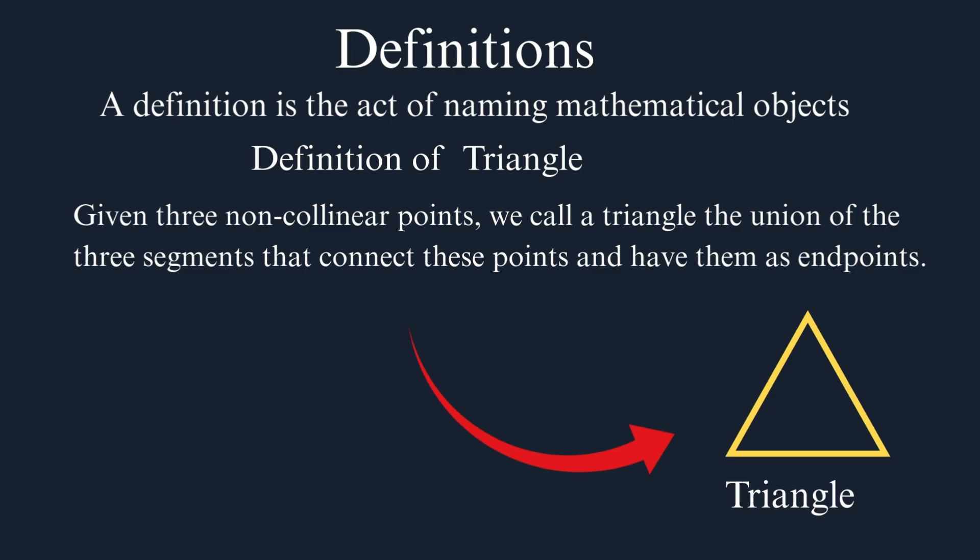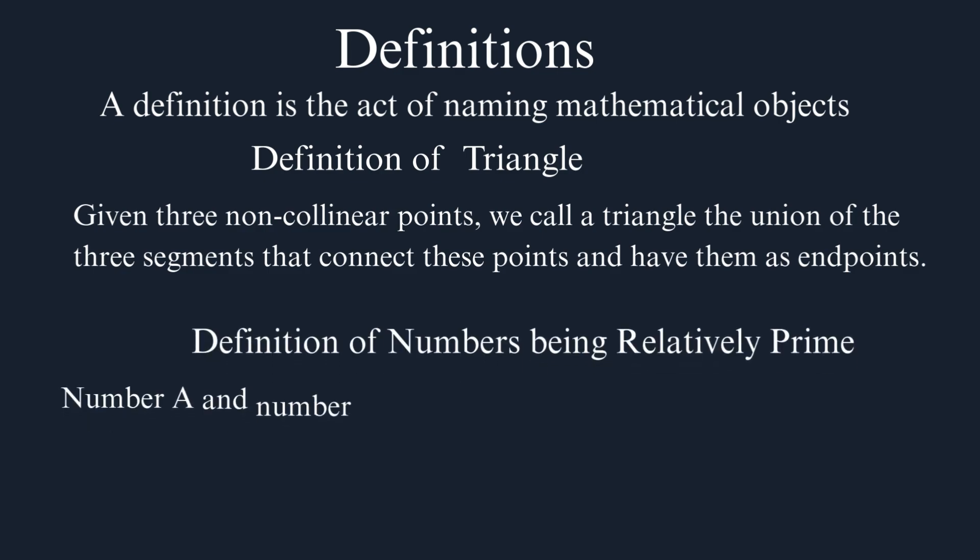Before this definition, the mathematical object triangle doesn't exist. It only comes to exist after the definition. So the definition is precisely the act of creation, the birth certificate of a mathematical object. This definition can be simply of a mathematical object or of the relationship between two objects. For example, the definition of numbers being relatively prime. Number A and number B are relatively prime when the GCD between A and B equals 1.